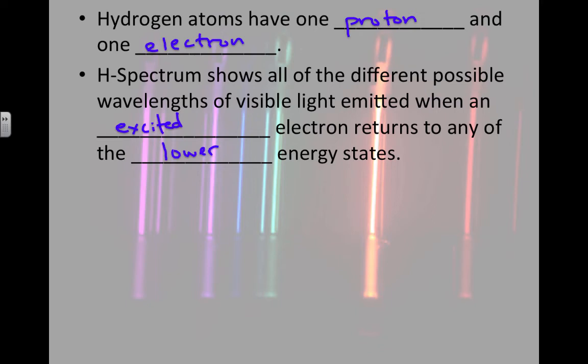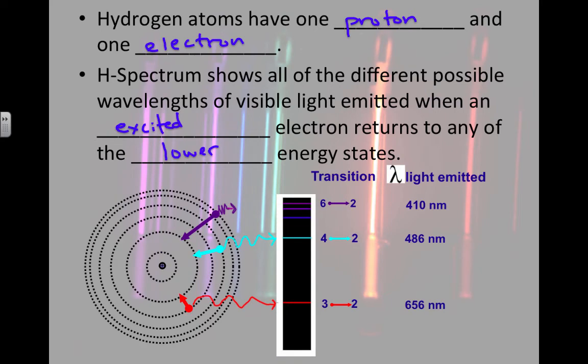Not just the ground state, but anything lower, going from higher to lower. So we see from a six to a two, we get a purple wavelength. From a four to a two, we get the blue. And from a three to a two, we get the red.